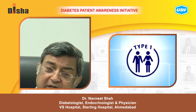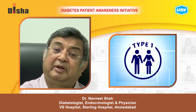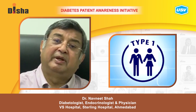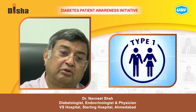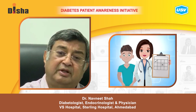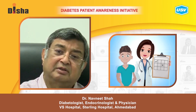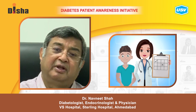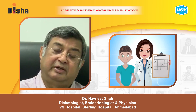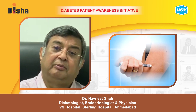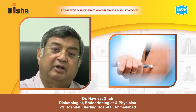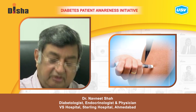In the pediatric group of type 1 patients, monitoring diabetes must be coupled with monitoring of growth. If adequate insulin is not given, children may not present to hospital due to diabetic complications, but their growth will be stunted. Adequate insulin is therefore important not only for glycemic control but also for the appropriate and optimum growth of children.